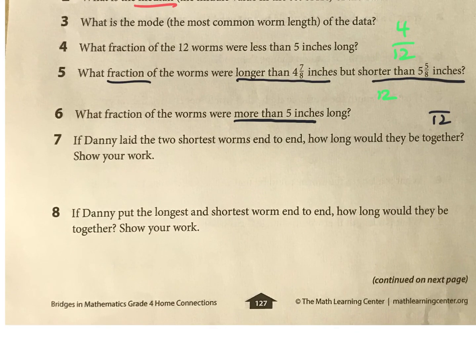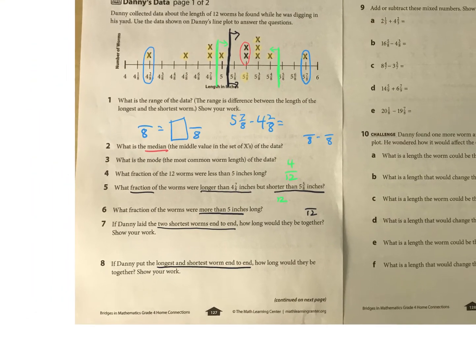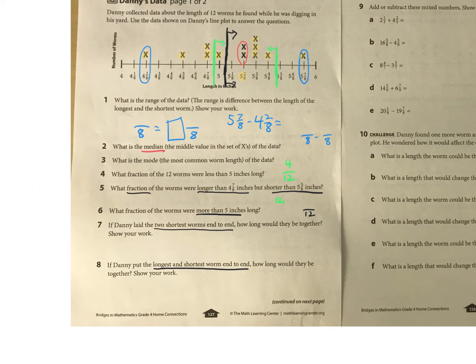Okay, finally, Danny's putting worms together: two shortest worms end to end, and then the longest and shortest worm end to end. So what we need to do—the two shortest would be 4 and 2/8, I see, and the second shortest is 4 and 5/8. So if you put those together, how long would they be? And then the longest and the shortest: so again we have 4 and 2/8, the longest is 5 and 7/8, so you need to add those together to figure out what it would be.